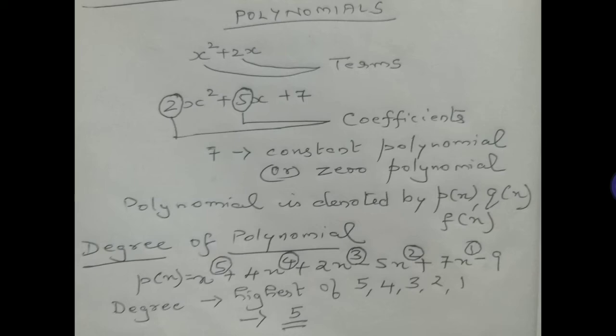Now what about 7 in 2x² + 5x + 7? It is a constant term — it is called a constant polynomial or zero polynomial. A polynomial is denoted by p(x), q(x), or f(x). Generally f(x) means function, but it can also denote a polynomial. If the variable is y or z the same notation applies.